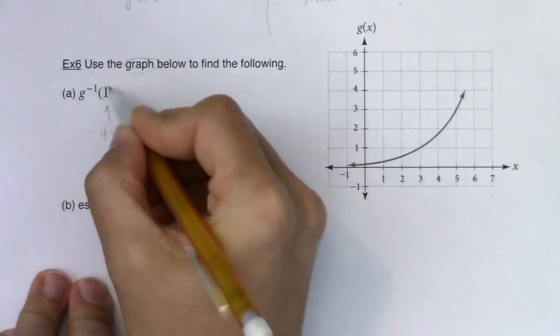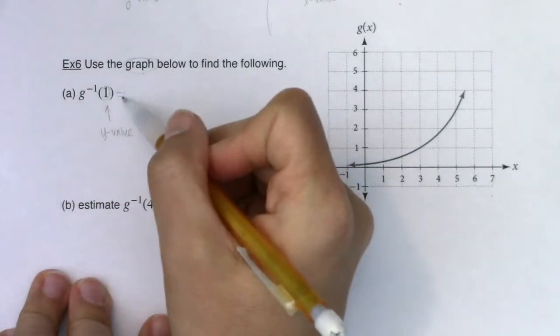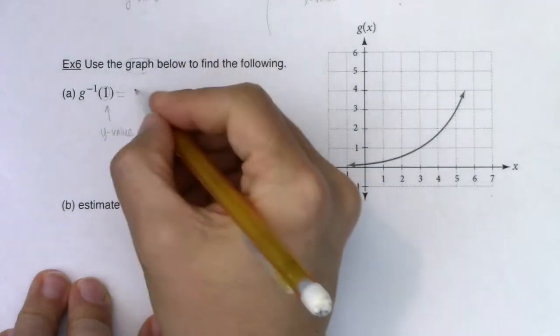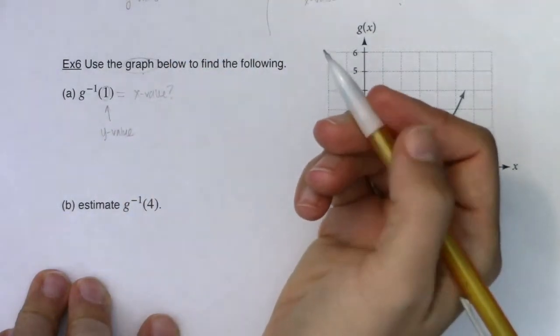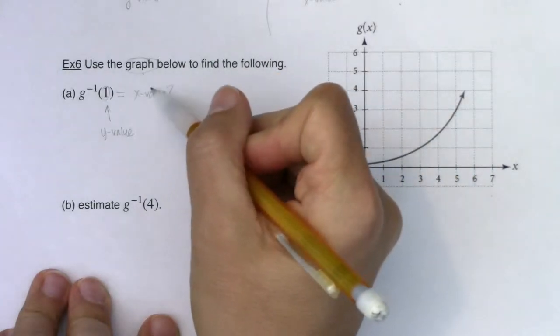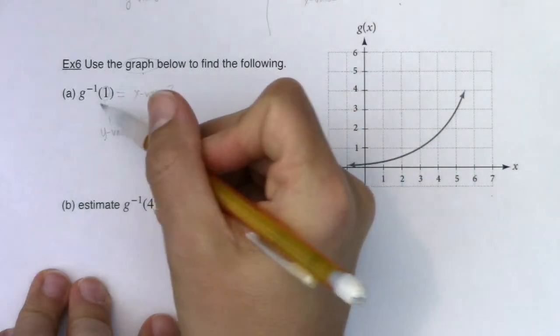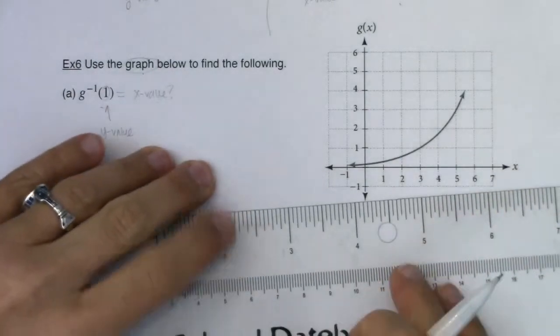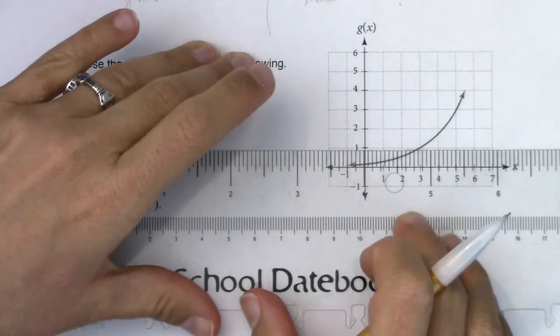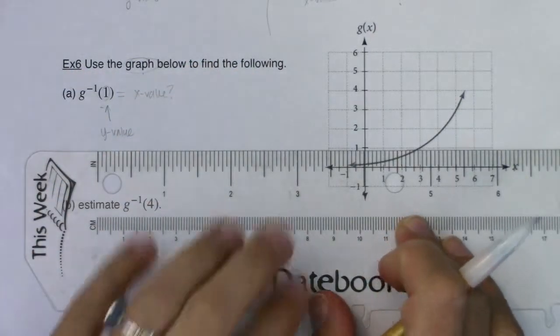What g inverse of 1 is asking is, what was the x value that went with it? I want to know what this x value is. So what x value gave me a y value of 1? Let's go find out. I'm going to take my ruler and go up to y equaling 1, or in this case, g of x equaling 1.